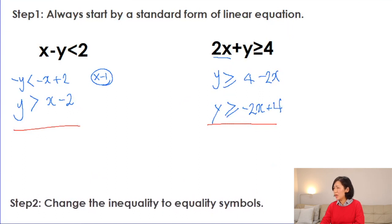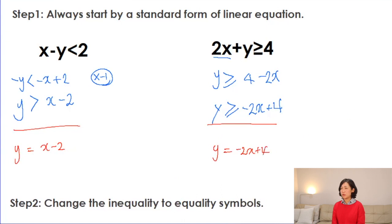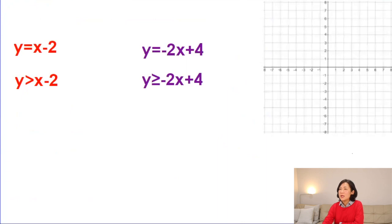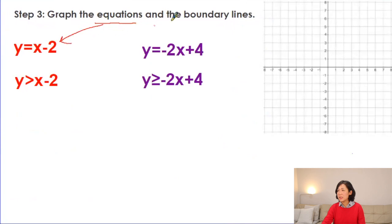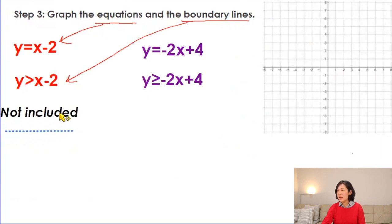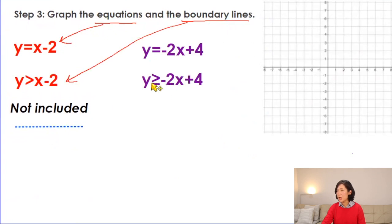Step two: change the inequality symbol into the equal sign, giving y = x minus 2 and y = minus 2x plus 4, because it's easier to draw the line. Step three: graph the equations and boundary lines. When it comes to boundary lines, we use a dotted line for strict less than or greater than because the value is not included, and a solid line for greater than or equal to or less than or equal to because the value is included.